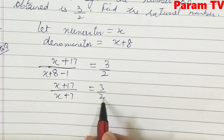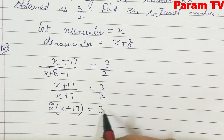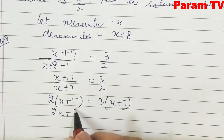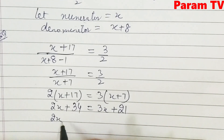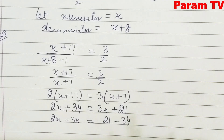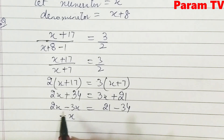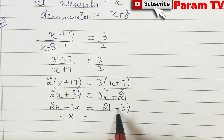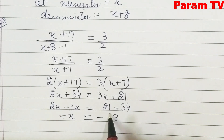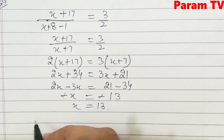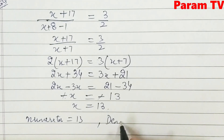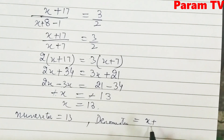Cross multiply: 2(x + 17) = 3(x + 7). Expanding: 2x + 34 = 3x + 21. Transposing: 2x − 3x = 21 − 34, so −x = −13, therefore x = 13. The numerator is 13 and the denominator is x + 8 = 13 + 8 = 21.